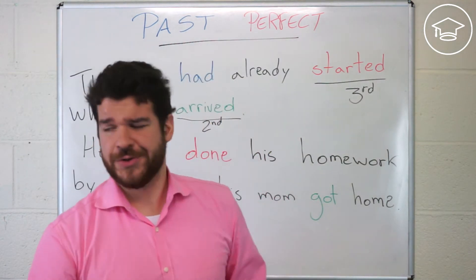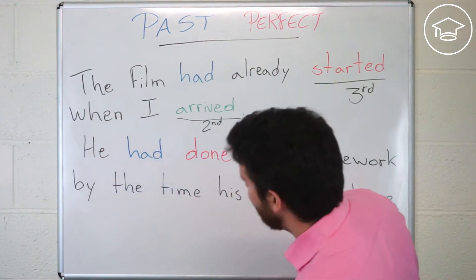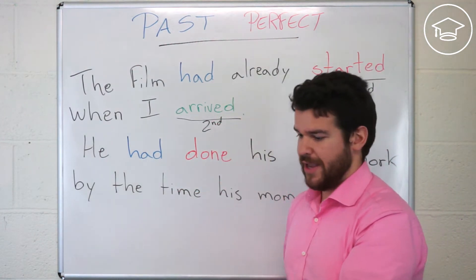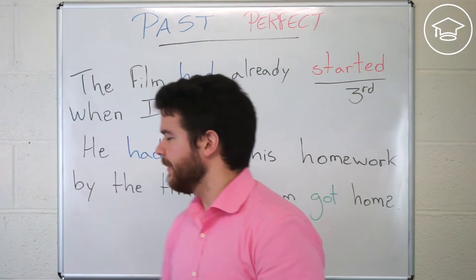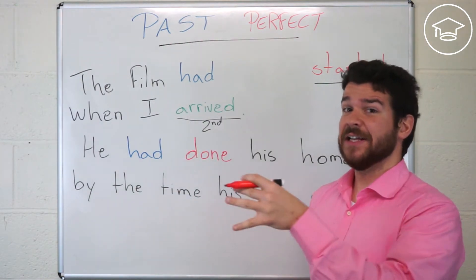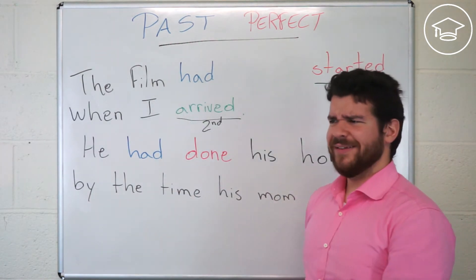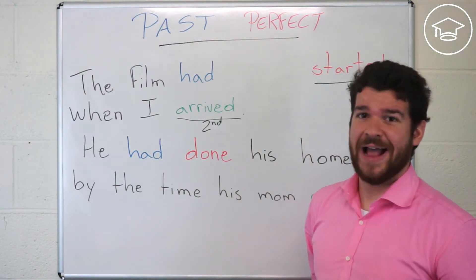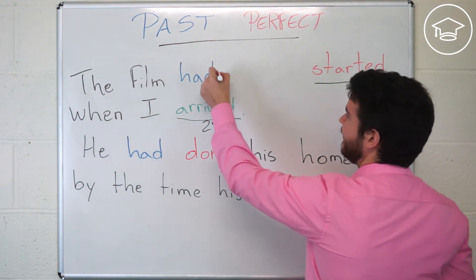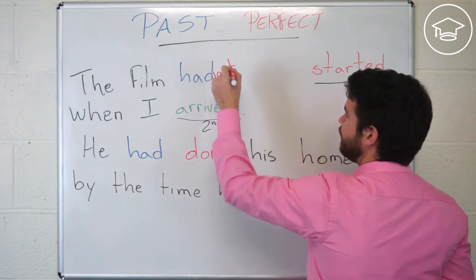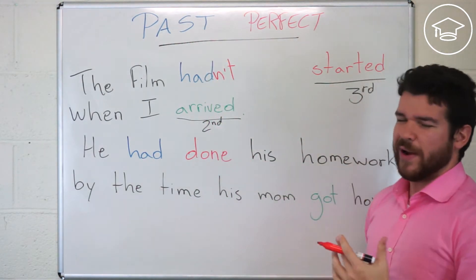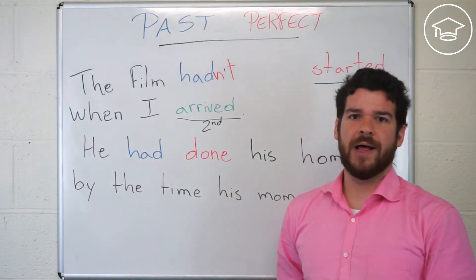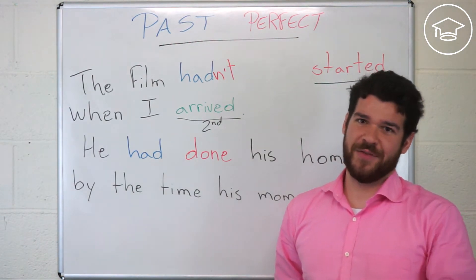Now let's see how to make negative sentences. The film had not started — in this case we drop 'already.' You can say 'had not' but you can also use the contraction: 'The film hadn't started when I arrived.' So it's cool — I'm still on time for the movie!